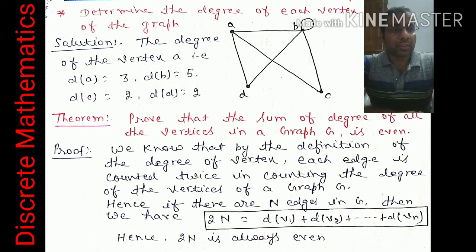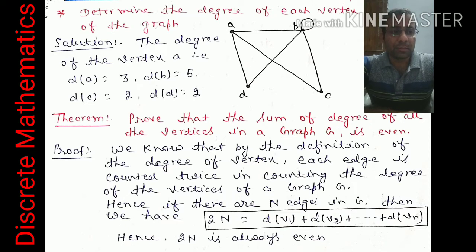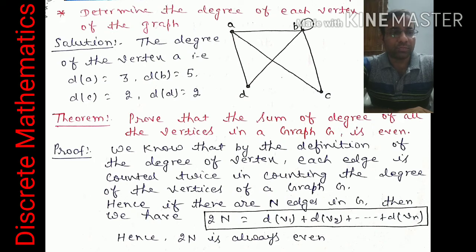Let us solve an example: determine the degree of each vertex of the given graph with vertices A, B, C, D. Degree of A is 3 because A is connected to B, C, and D. Degree of B: B has a loop (counts as 2) plus connections to A, D, and C, so deg(B) = 5. Degree of C: connected to A and B, so deg(C) = 2. Degree of D: connected to A and B, so deg(D) = 2.